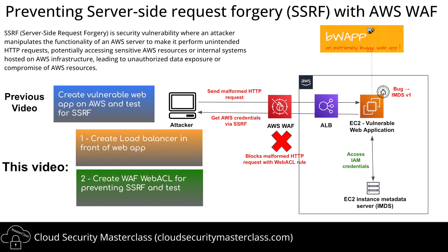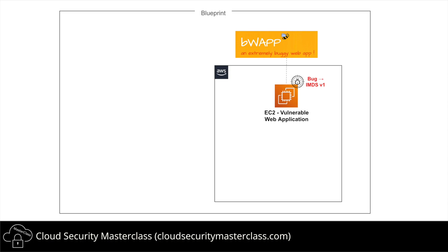Let's see a quick blueprint of how this demo would work. In this lab we have an EC2 instance deployed on AWS that has been intentionally made vulnerable to SSRF attack. There are two things we are doing to make it intentionally vulnerable. One is installing an extremely buggy web application — an open source intentionally vulnerable application used as a demonstration for IT security teams. The second vulnerability is the usage of IMDS V1 server for accessing the EC2 instance metadata server.